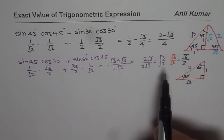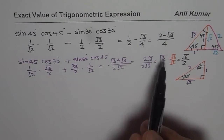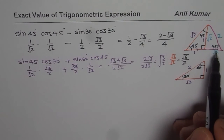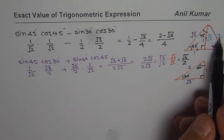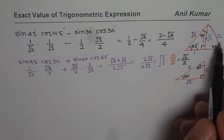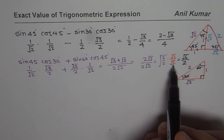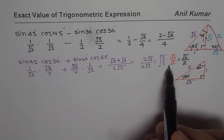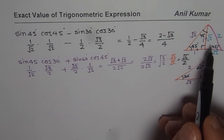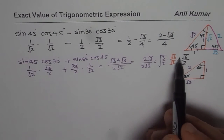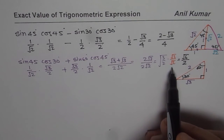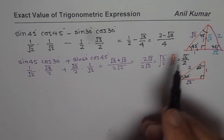To rationalize, multiply and divide by square root 2. Square root 3 times square root 2 gives square root 6 in the numerator. Square root 2 times square root 2 gives 2 in the denominator. So the final rationalized answer is square root 6 over 2. Note: using the triangle with sides square root 2, square root 2, and 2 would have avoided this rationalization step.